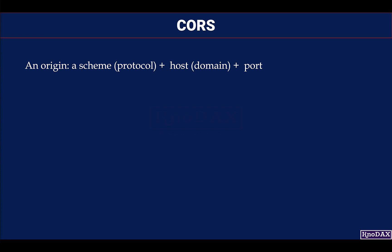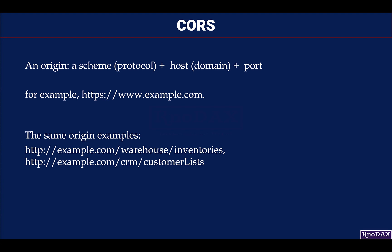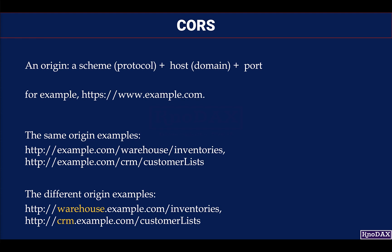The question is: what is an origin in the web context? An origin is a protocol, domain, and port. The implied port is 443 for HTTPS and 80 for HTTP. Same origin examples: http://example.com/warehouse/inventories and http://example.com/crm/customer-lists. Different origin examples: http://warehouse.example.com/inventories and http://crm.example.com/customer-lists.